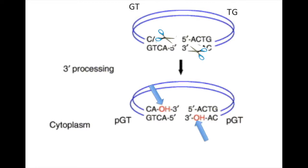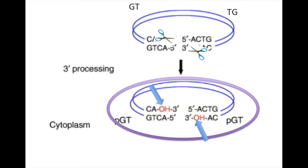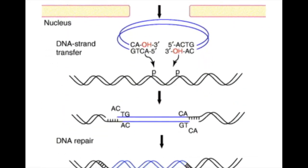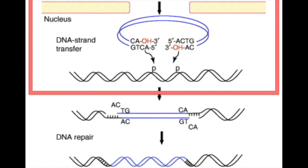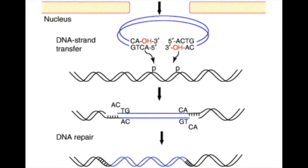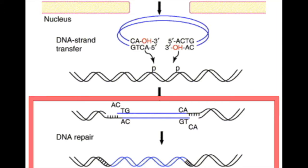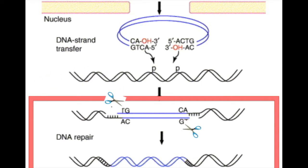The now exposed 3' hydroxyl group attacks opposite strands of the host DNA and integrates into the host DNA where the sites of integration on the two host DNA strands are 4 to 6 base pairs apart. Through this process, a series of transesterification reactions occur. The two nucleotide flaps on the HIV DNA 5' strands are then removed, and the new viral DNA is now inserted into the host DNA.